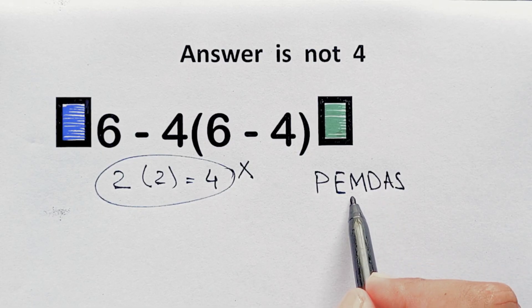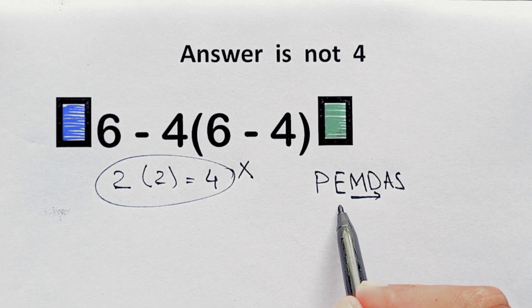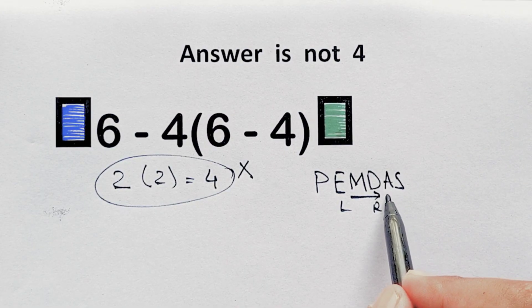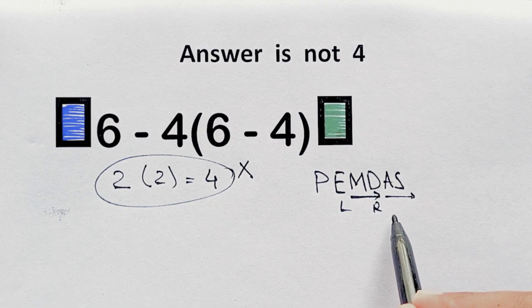Remember that multiplication and division have equal priority, and we have to work from left to right, and the same applies to addition and subtraction. So here first we do this parenthesis.